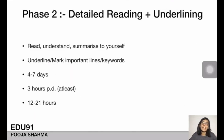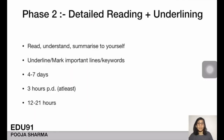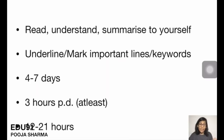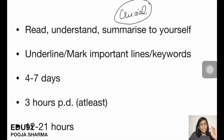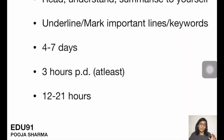Phase 2 is detailed reading plus underlining. Unlike Phase 1, we are now trying to understand every concept. You have to read, understand, talk to yourself, summarize to yourself, and explain the concept in easy words to recall it. Along with understanding, you must underline and mark the important lines and keywords. Phase 2 is the most crucial part where you actually understand the concepts. You can spend 4-7 days on this, about 3 hours per day.